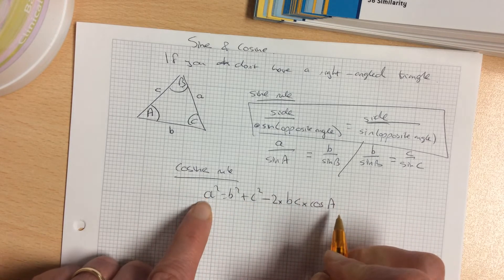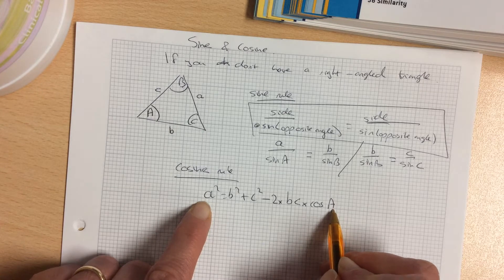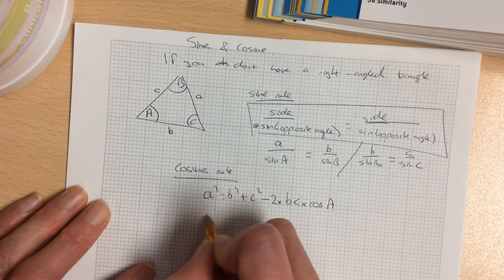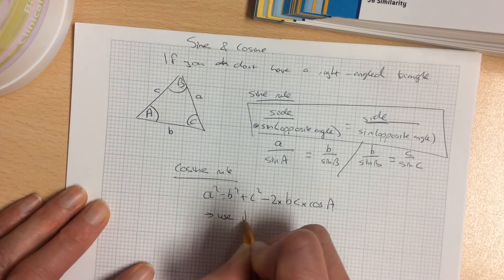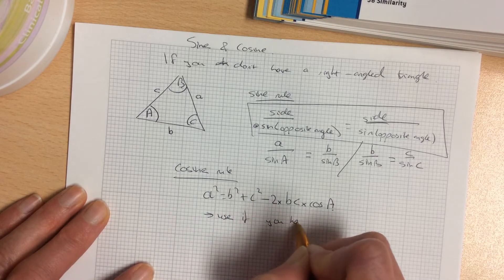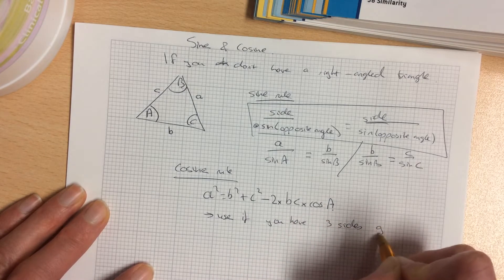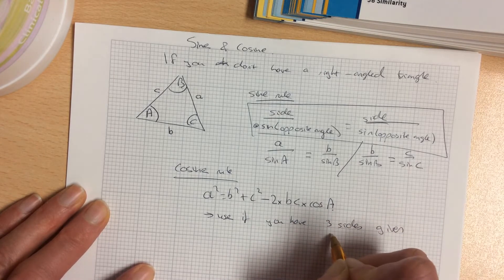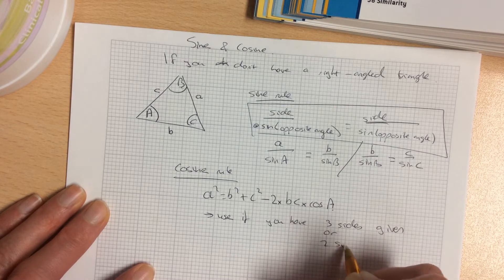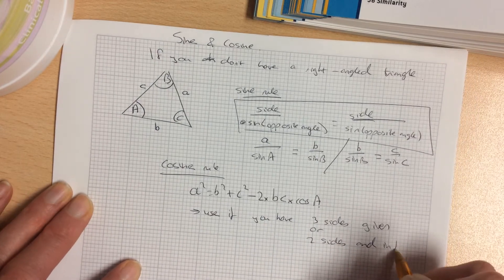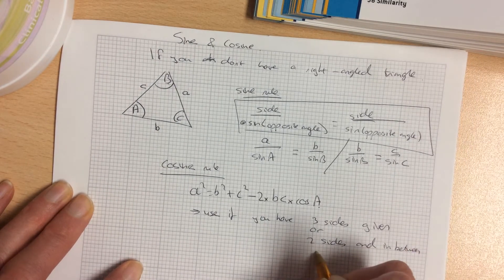So if you start with side a, you end with angle A. Use this one if you have three sides given, or you have two sides and the in-between angle.